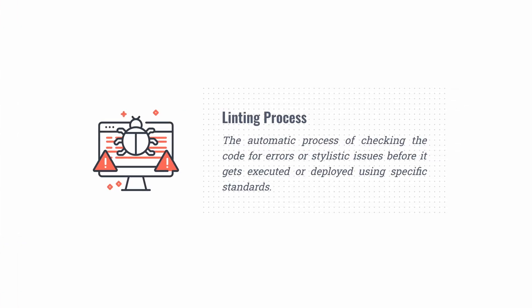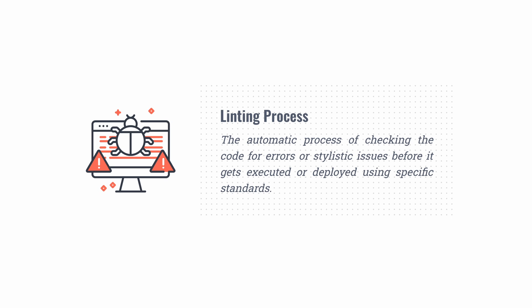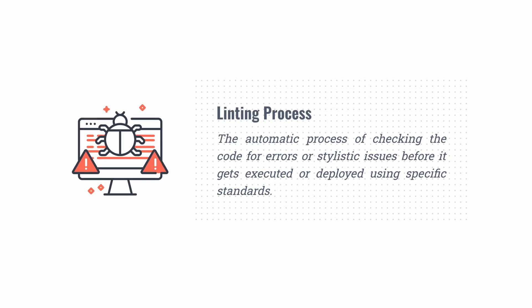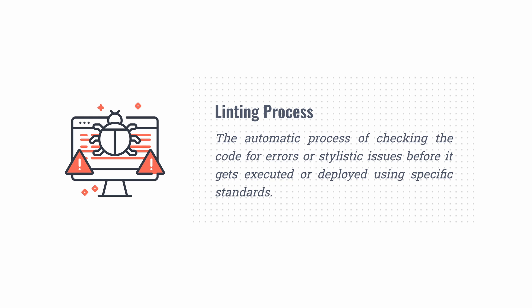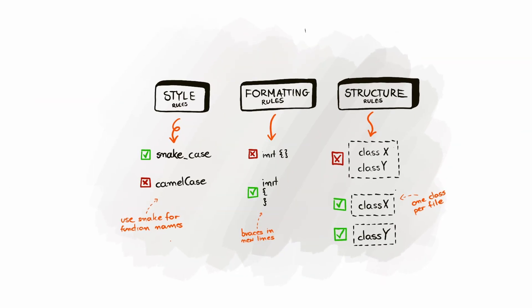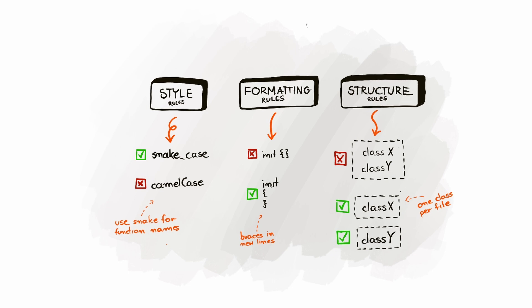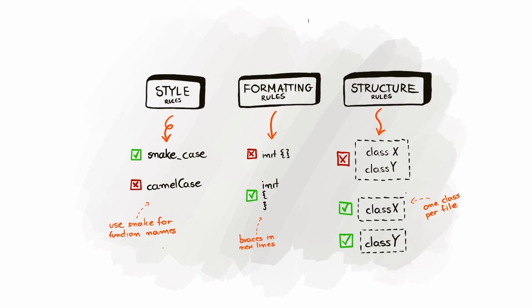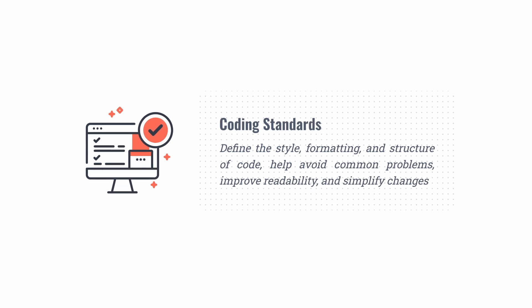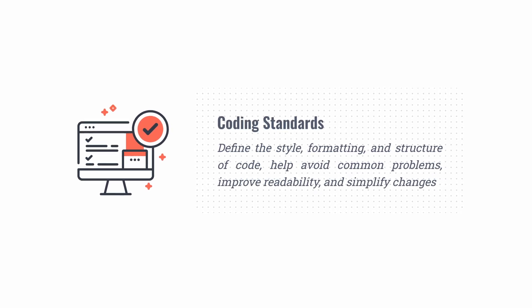The linting process in terms of coding is simply the automatic process of checking code for errors or stylistic issues before it gets executed or deployed, based on specific coding standards. Coding standards are the set of guidelines, conventions and best practices that developers follow when coding. They define the style, formatting and structure of the code, help avoid common problems, improve readability and simplify changes. They can be maintained using two types of tools — linters and formatters.